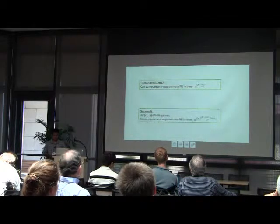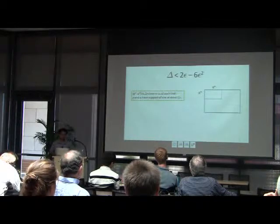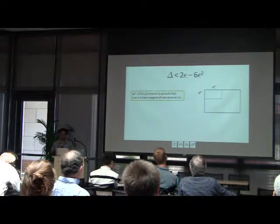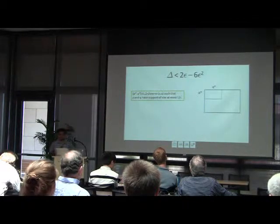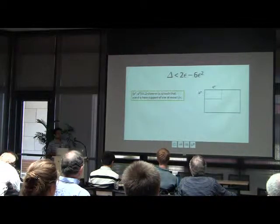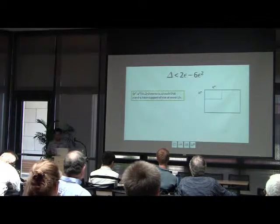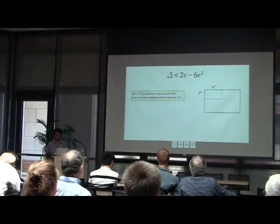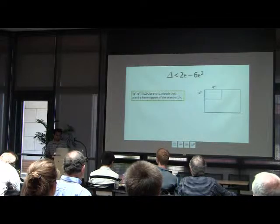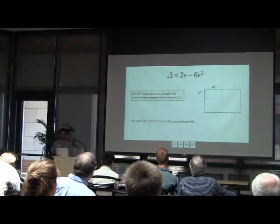The second result is for the case when delta is very close to epsilon. If delta is roughly less than 2 epsilon, one can show that the Nash equilibrium is going to be close to a set of strategies with small support, and then you can write a linear program to find an order-epsilon approximate Nash equilibrium.